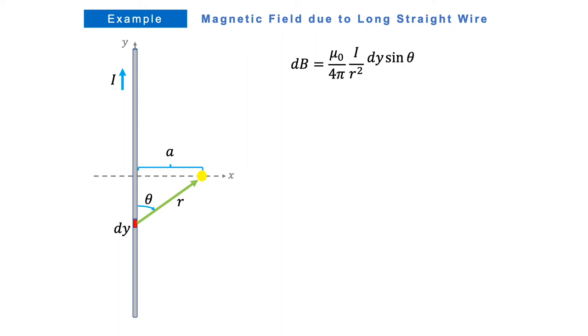Now let's examine this equation. To get the total magnetic field, we have to integrate both sides. On the right-hand side, current is constant, so I can take this out of the integral sign. But dy, sine theta, and r are all changing when I vary dy. Hence, we have to write r and sine theta in terms of the integration variables like dy or y.